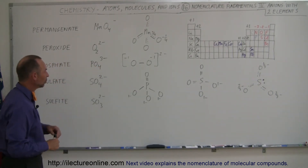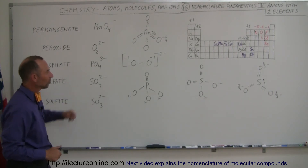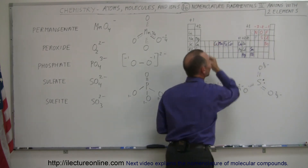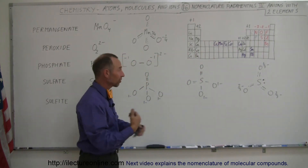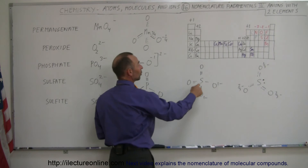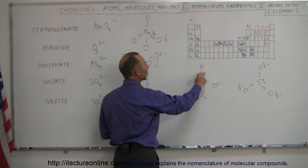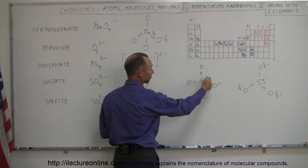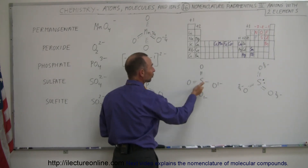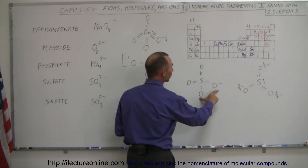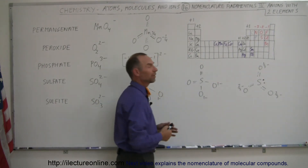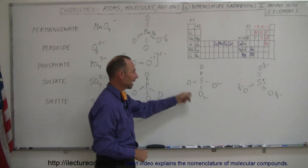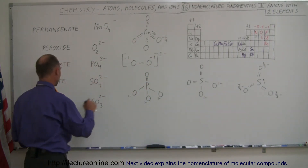Sulfate is SO4²⁻ — sulfur with four oxygens. Sulfur has six valence electrons, so it forms a double bond with two of the oxygens, which takes up four electrons, and only has two electrons left to form single bonds with the other two oxygens. Those oxygens then grab another electron to fill their last slot, so the whole ion has a negative two charge.